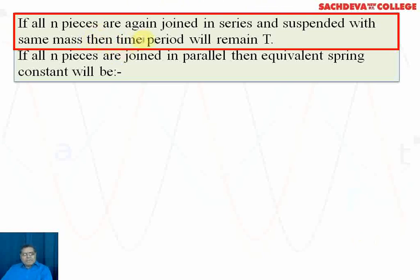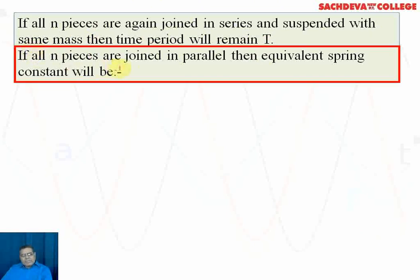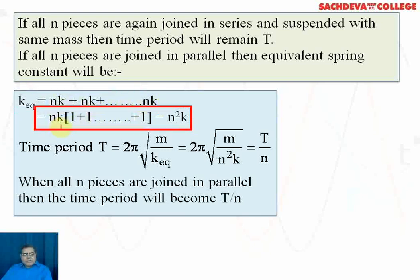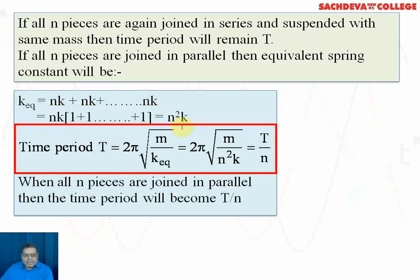If all n pieces are joined back in series and suspended with the same mass, the time period remains T — it does not change. If all n pieces are joined in parallel, the equivalent spring constant is k_eq = nk + nk + nk ... repeated n times. Taking n as common and summing n ones gives k_eq = n²k.